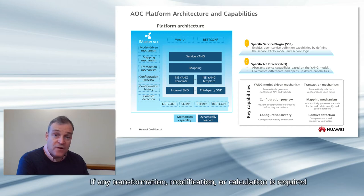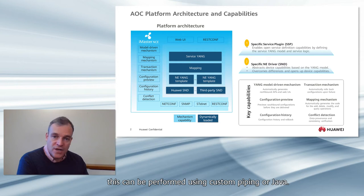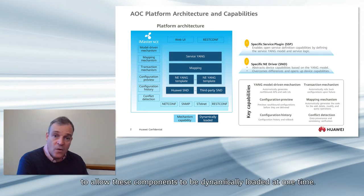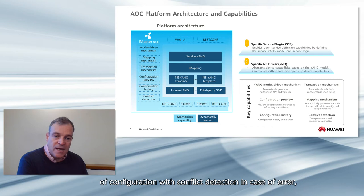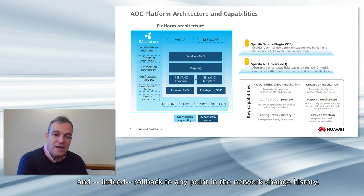If any transformation, modification, or calculation is required before the API information is applied to the template, this can be performed using custom Python or Java. The AOC platform provides the model-driven infrastructure to allow these components to be dynamically loaded at runtime. It provides the engine that allows the merging of configuration with conflict detection in case of error, as well as a transaction mechanism that allows preview, network level rollback on failure, and indeed rollback to any point in the network change history.